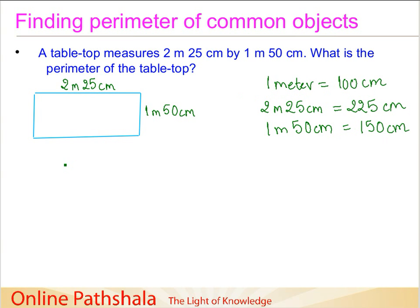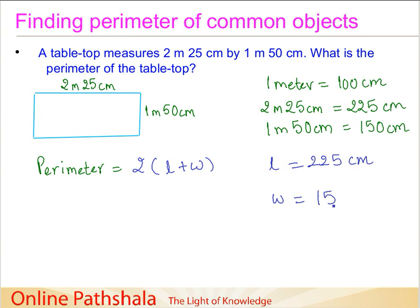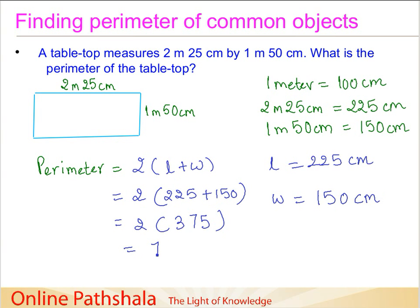Now it is straightforward. The perimeter is given as twice of length plus width. In our case, L = 225 cm and W = 150 cm. Substituting: 2 × (225 + 150) = 2 × 375 = 750 cm. If we want to express this in meters, we divide by 100, giving us 7.5 meters. Therefore, the perimeter of the table top is 7.5 meters.